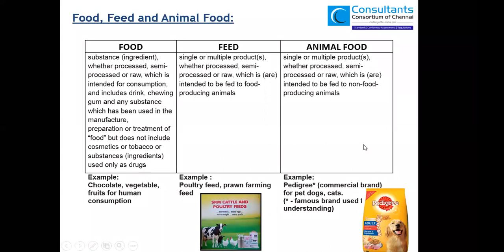Another category is 'animal food,' which specifically refers to products intended to be fed to non-food producing animals, such as pet animals — cats and dogs. This comes under non-food-producing animals. For these, we have a specific category called animal food or pet food products. In ISO 22000, we cover both feed and animal food. This is a basic requirement to consider when implementing this standard.